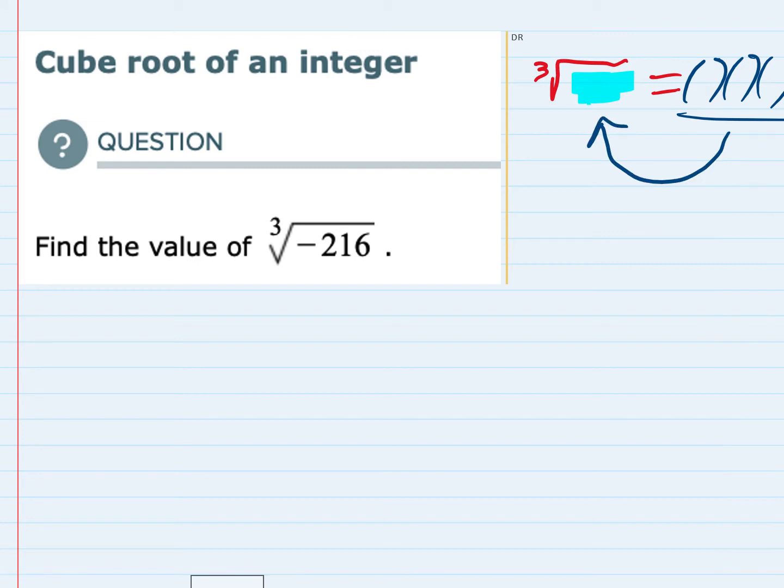So what number can we multiply by itself three times to give us negative 216 in this case? And notice that it does have to be negative.